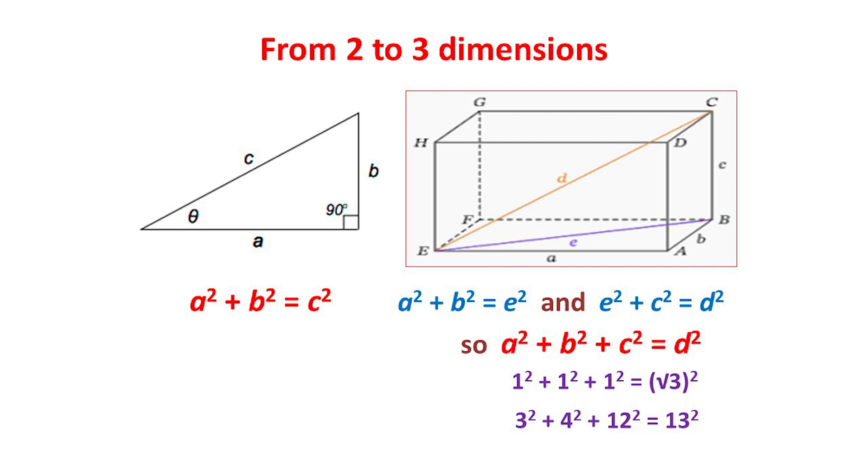Applying the Pythagorean theorem to the bottom triangle a, b, e, we get a² + b² = e². Then applying it to the vertical triangle dce gives e² + c² = d². Eliminating e² now gives a² + b² + c² = d². And this is the three-dimensional Pythagorean theorem.